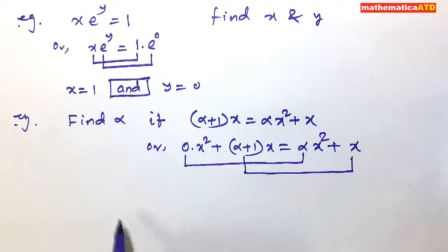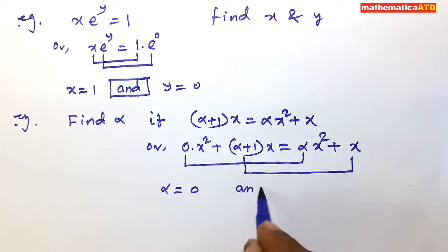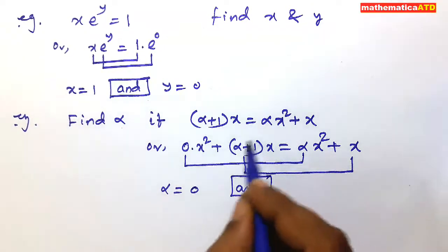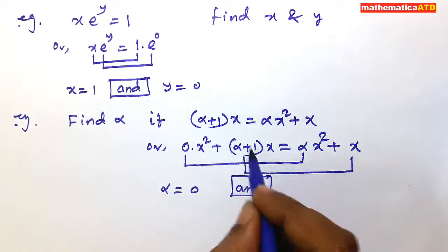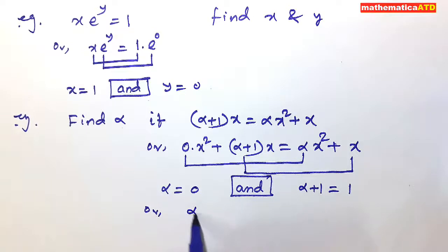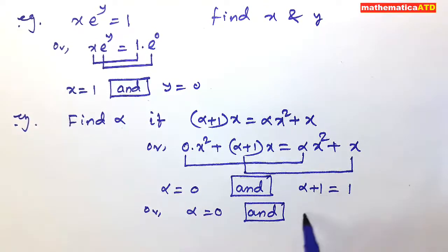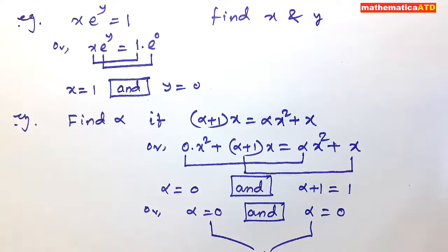Compare the coefficients respectively. So 0 is equal to alpha, meaning alpha is equal to 0. And alpha plus 1 is equal to 1 — the coefficient of x on the right side is 1, and on the left side is alpha plus 1. So alpha plus 1 equals 1, giving alpha equal to 0 again. The common solution of both conditions is alpha is equal to 0.